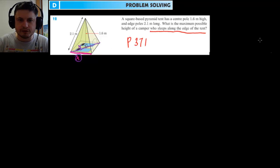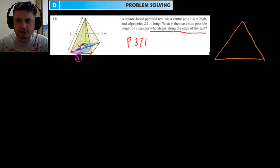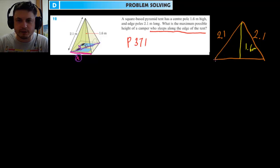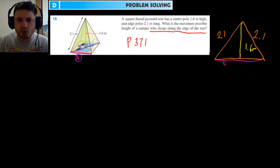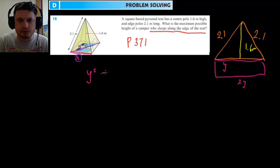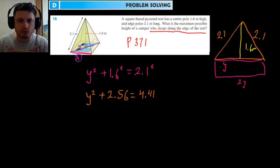Step one: find the purple diagonal y. Looking at the tent from the side, we see an isosceles triangle with two sides of 2.1 meters and a center pole of 1.6 meters. Taking half the base as y, Pythagoras gives us: y² + 1.6² = 2.1², so y² + 2.56 = 4.41, meaning y ≈ 1.36 meters.